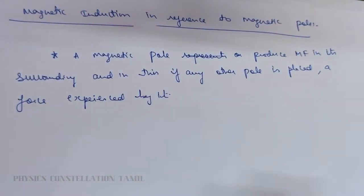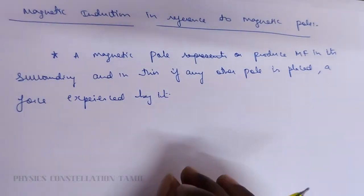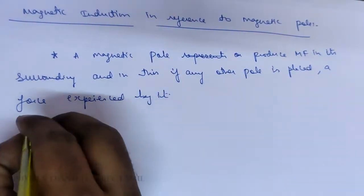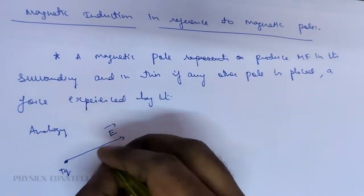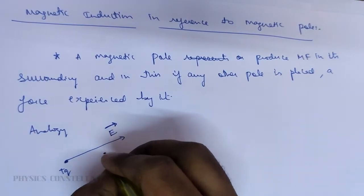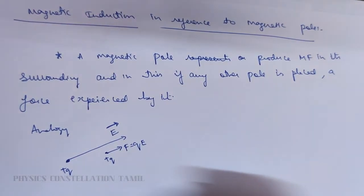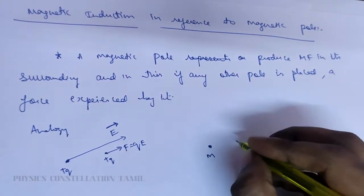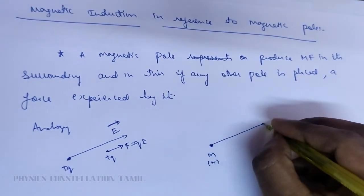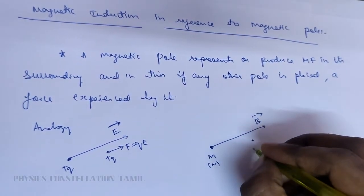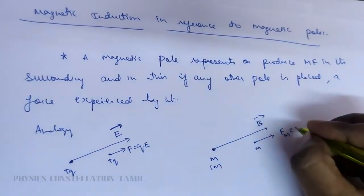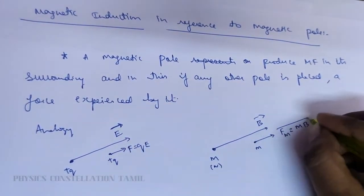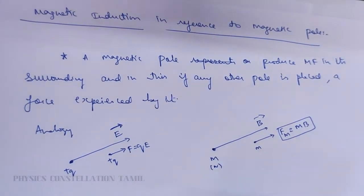We can take the analogy: one of them is an electric charge in the electric field. Similarly, a magnetic pole in a magnetic field experiences a force — that is the magnetic force.